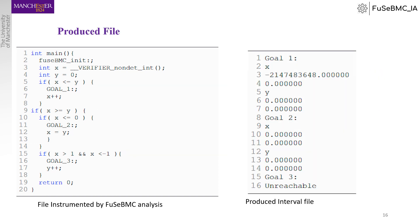Then we produce the interval file shown on the right. We see each goal followed by its variables. Each variable has the lower bound followed by the upper bound. When a contractor produces an empty set, we mark it unreachable.